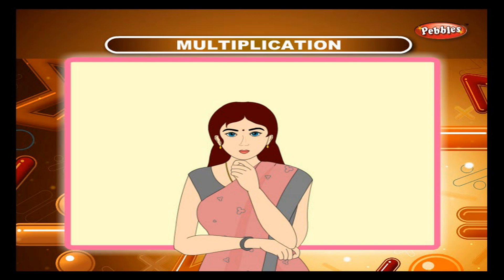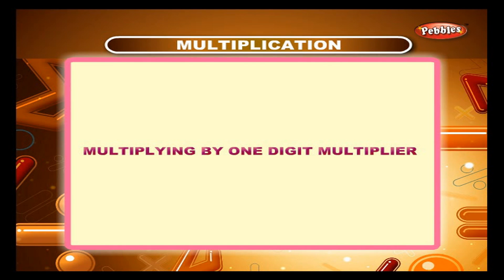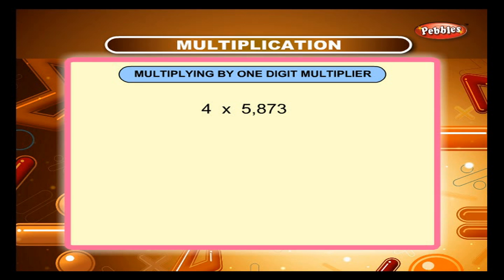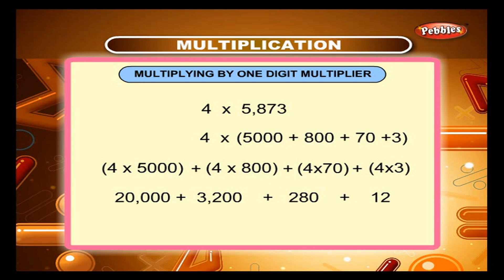Similarly, if you have to multiply by 1000, put 3 zeros on the right of the given number. For example, 2 into 1000 is equal to 2000. When you have to multiply 4 into (5000 plus 800 plus 70 plus 3), which is the expanded form of the number, multiply each number by 4: 4 into 5000 plus 4 into 800 plus 4 into 70 plus 4 into 3. We get 20,000 plus 3,200 plus 280 plus 12. Add all the products; the answer is 23,492.